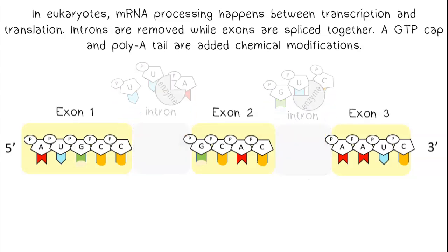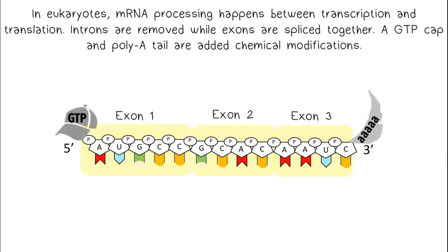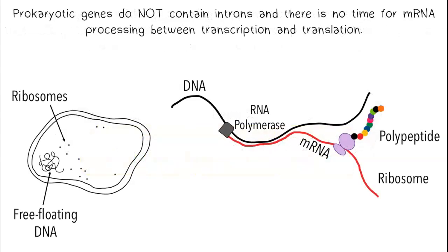Introns are removed, while exons are spliced together. A GTP cap and a poly-A tail are added as chemical modifications. Prokaryotic genes do not contain introns, and there is no time for mRNA processing between transcription and translation.